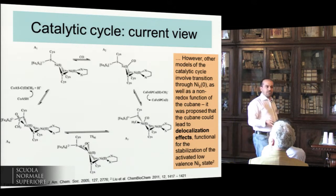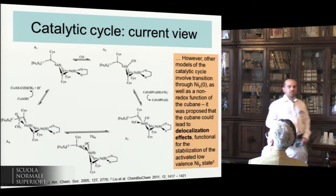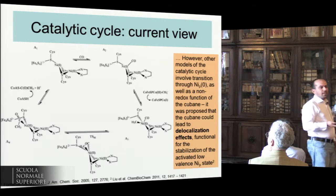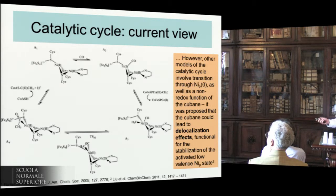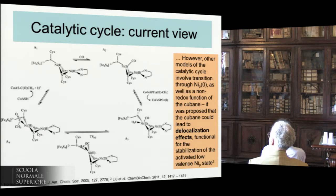All the chemistry basically happens at the level of the nickel ion, which is called proximal because it's close to the iron-4S4 cluster. But other authors have been arguing that this cluster is actually always in the +2 redox state and is unable to transfer any electron. The role might instead be to allow delocalization of charge, which might allow stabilization of a low-valent proximal nickel.